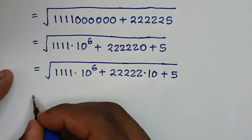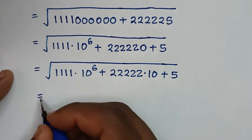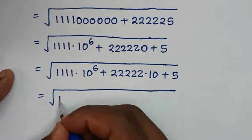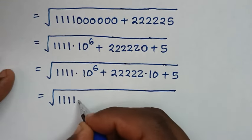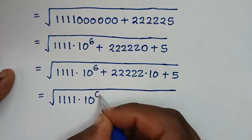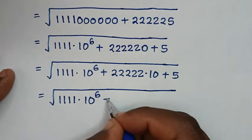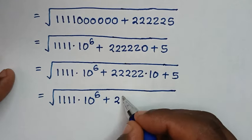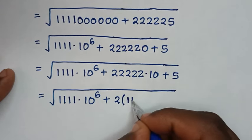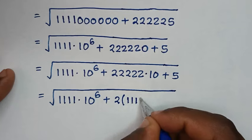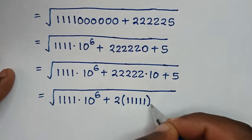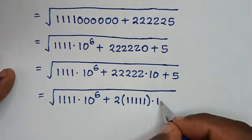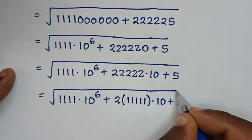Then in the next step, it will be equal to square root of 1s, we have 1, 2, 3, 4. Then times 10 power of 6, plus these 2s — we have 5. So it's same as 2. Then bracket 1, 1, 1, 1, 1, 1. Then bracket, because this 10 is this. Then times this 10, plus 5.